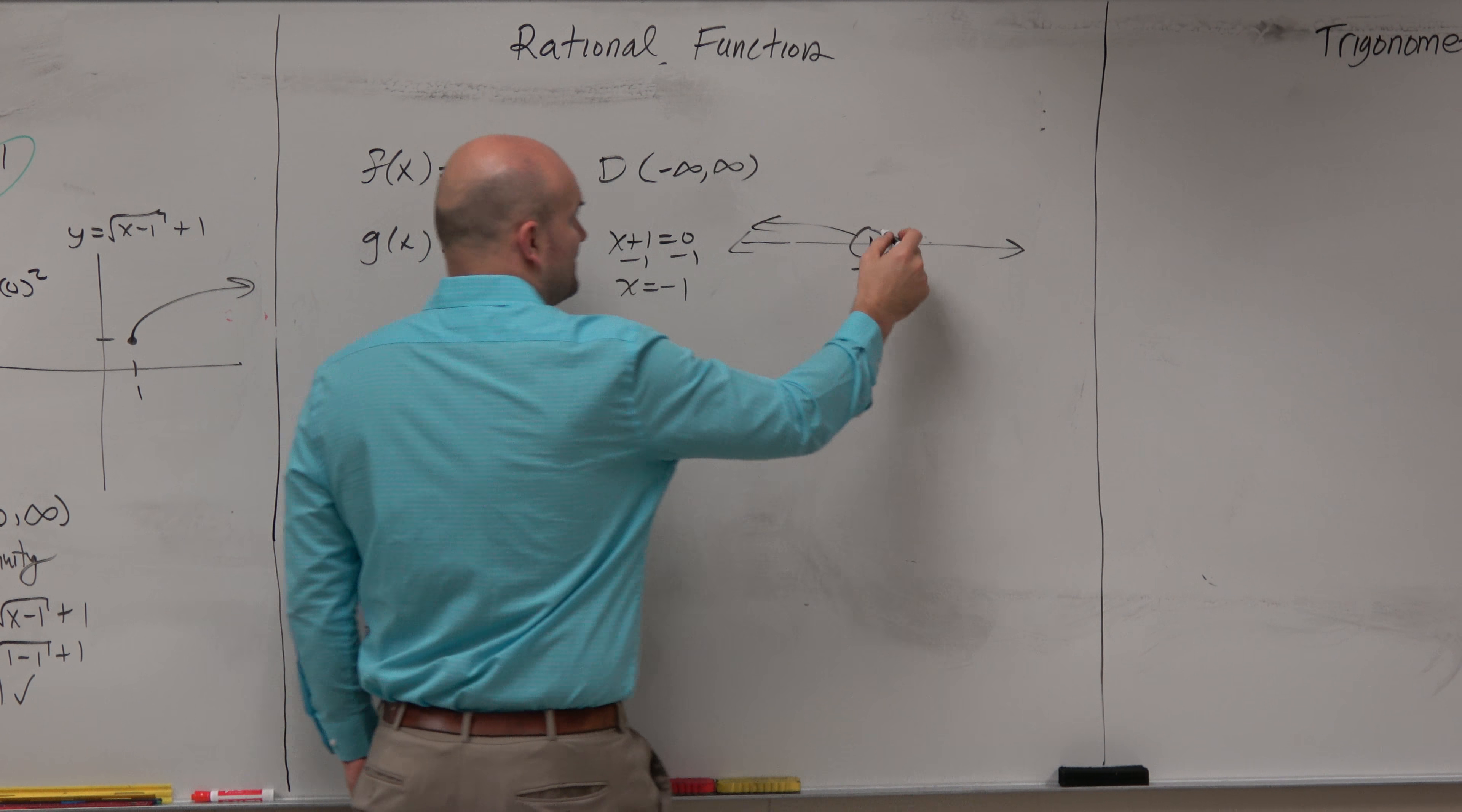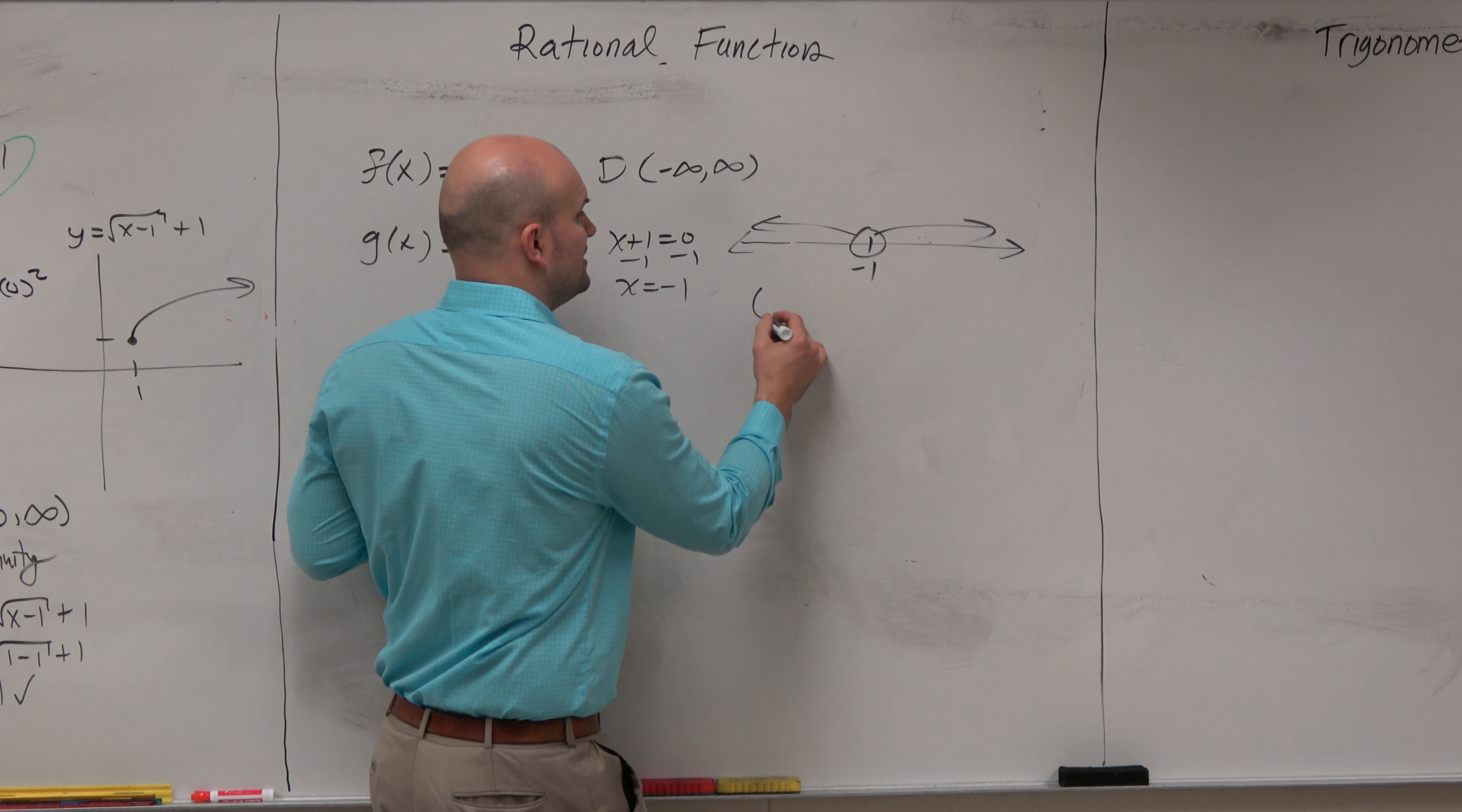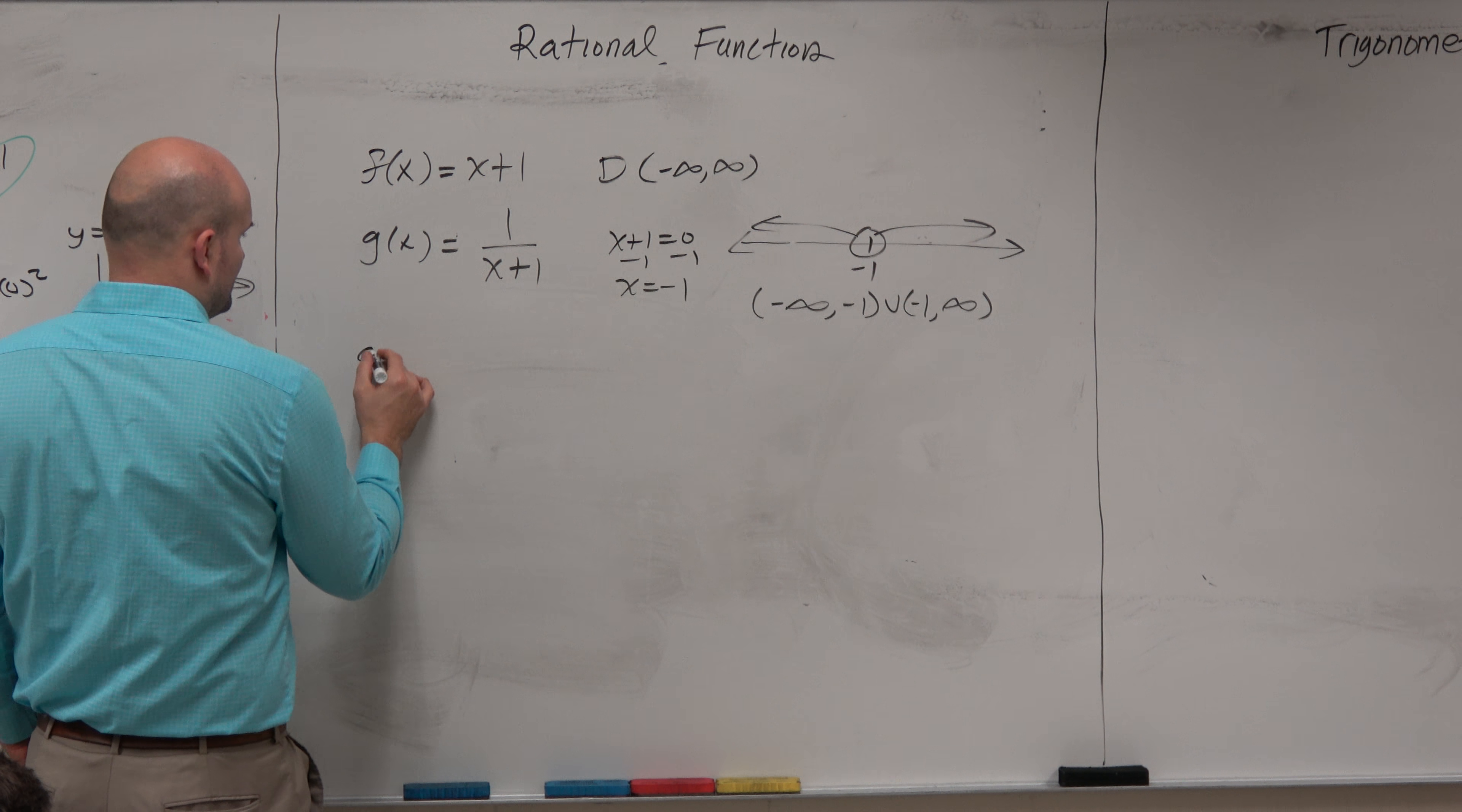So everything to the left, everything to the right, just not negative 1. Because negative 1 makes the denominator 0, and you can't divide by 0. So to write my domain in set notation, it would be negative infinity to negative 1, union negative 1 to infinity. And then we play around with it again.